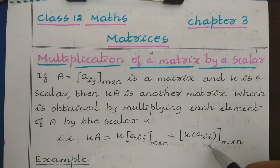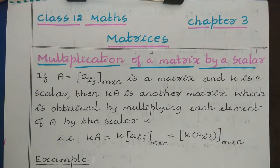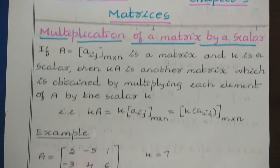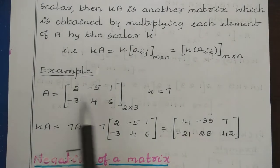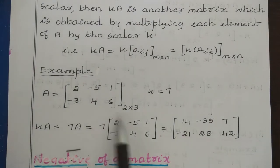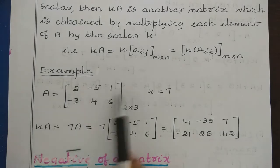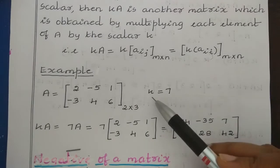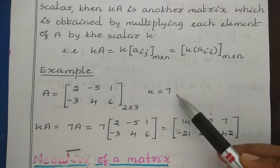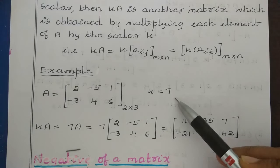The order of the matrix is not going to change. Let us understand this by taking an example. I have taken a matrix with elements 2, minus 5, 1, minus 3, 4, 6, which is a 2 cross 3 matrix. Here we have 2 rows and 3 columns, and I have taken one scalar value K equal to 7.